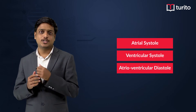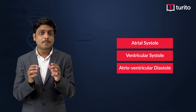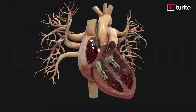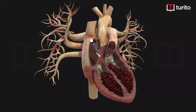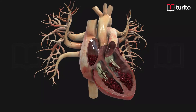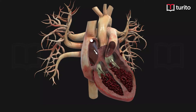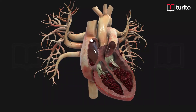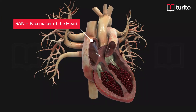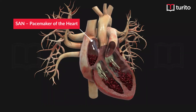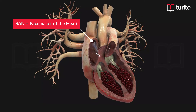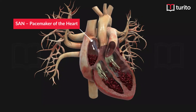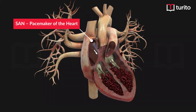Let us see what happens during atrial systole. The atrial systole begins with the release of cardiac impulses, or contraction impulses, from the sinoatrial node that is located in the right atrium near the opening of the superior vena cava. The sinoatrial node is also called the pacemaker of the heart, since it is responsible for setting the rhythm of the heart. The cardiac impulses released from the sinoatrial node are distributed to all parts of the atria, and as a result, the atria contract.